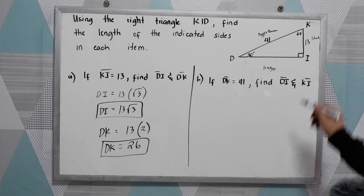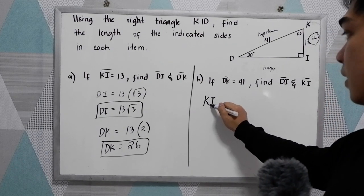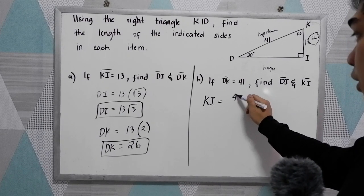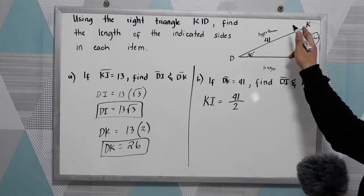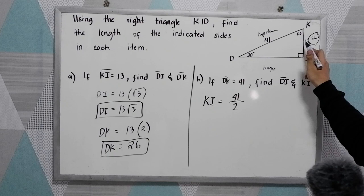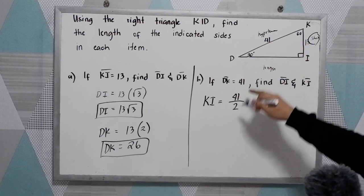So first, we need to find the shorter leg, which is KI. KI is 41 over 2. So to get the hypotenuse, we just multiply 2 to the shorter leg. So converse of that, we need to divide by 2. So we have 41 over 2 as our KI.